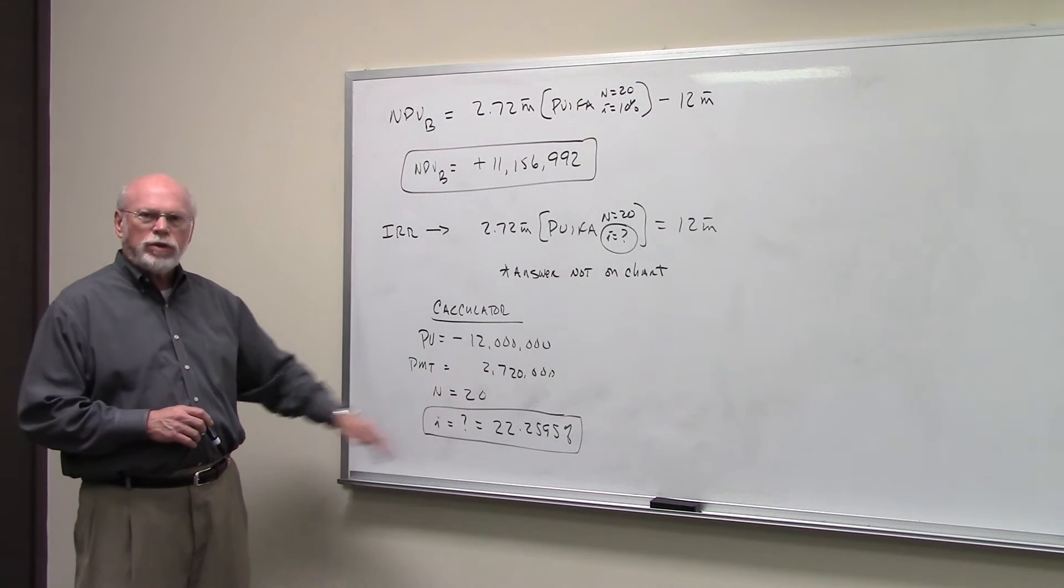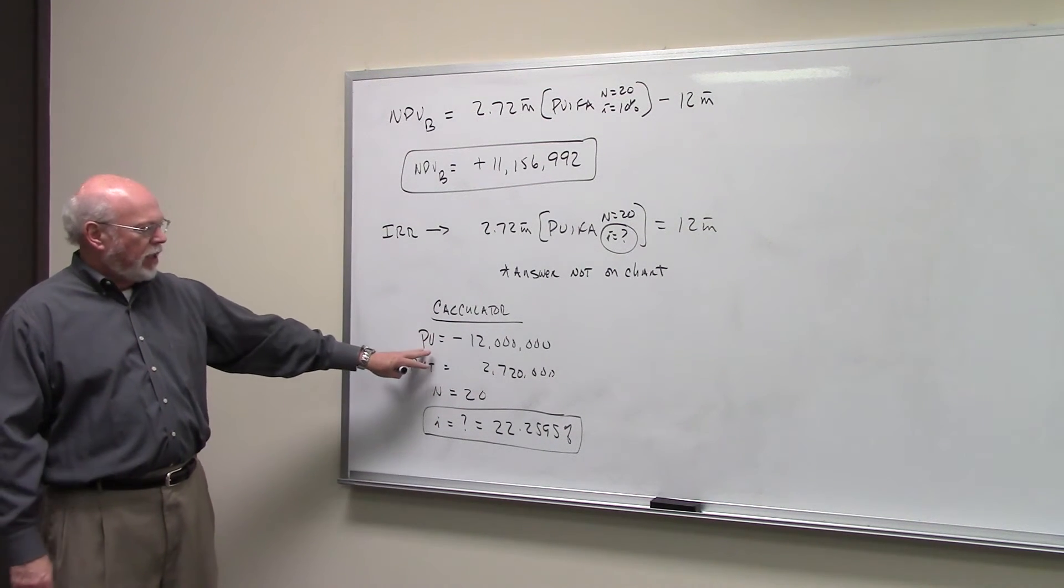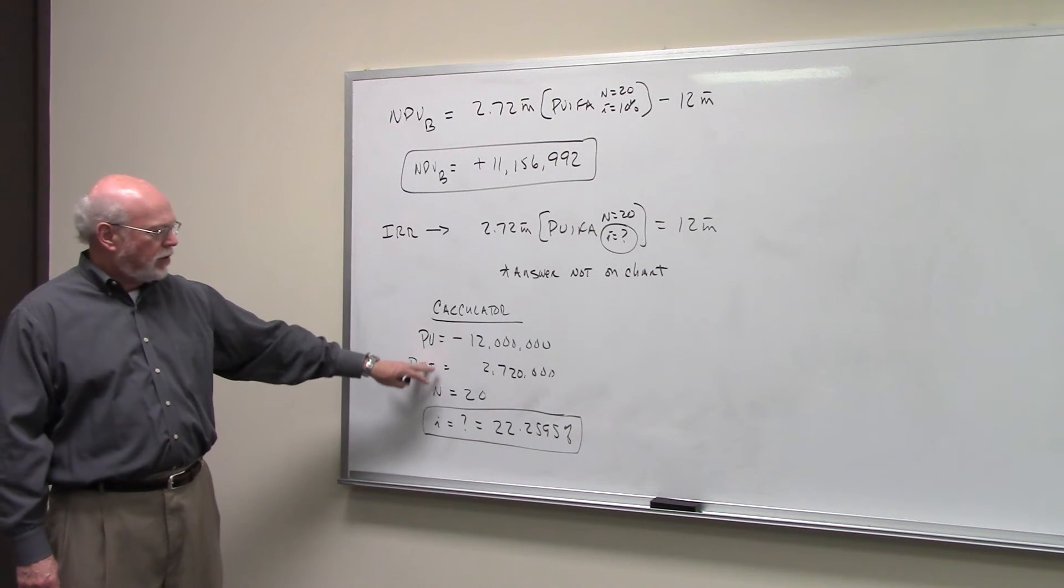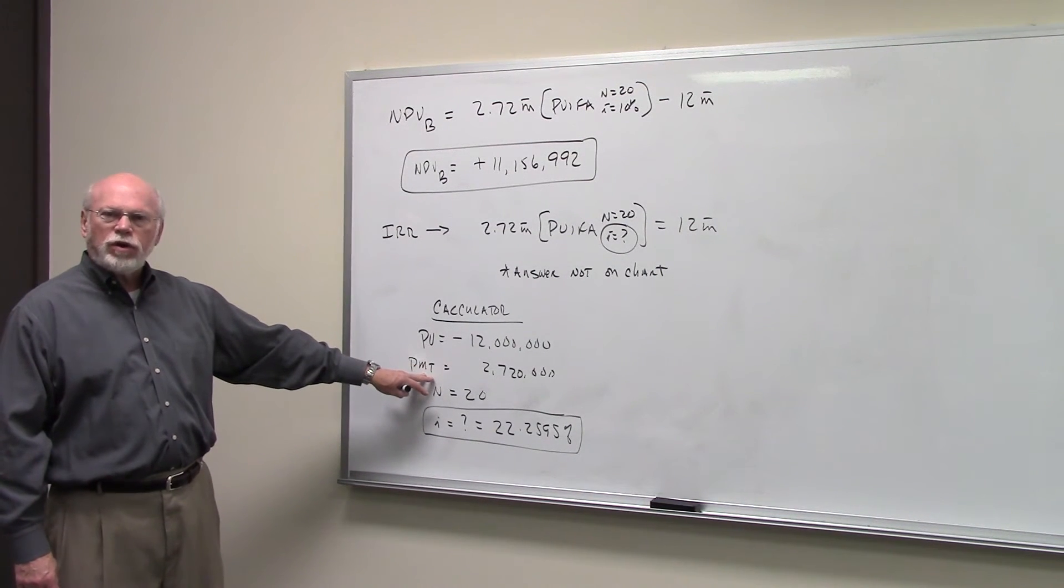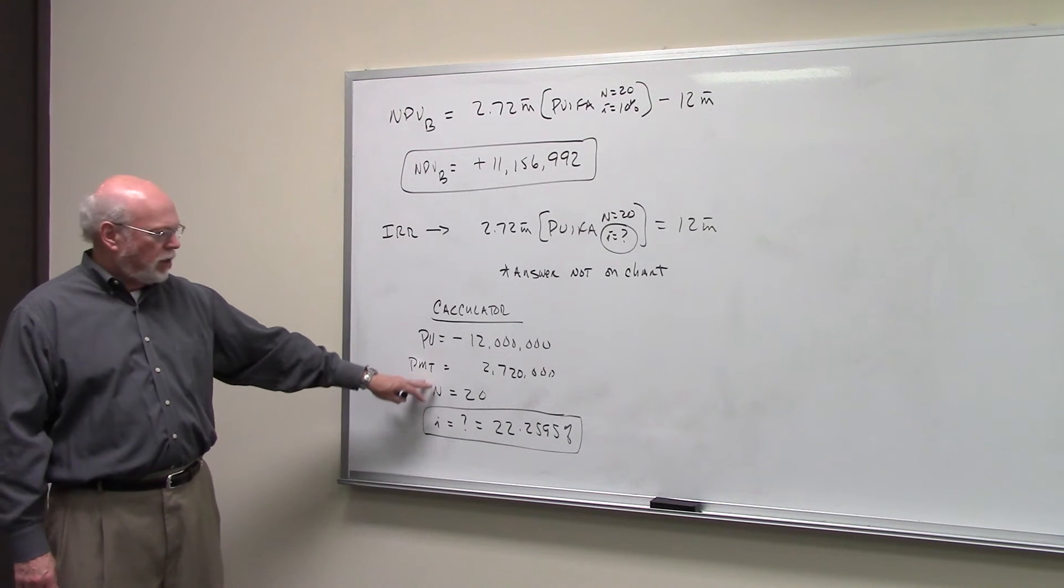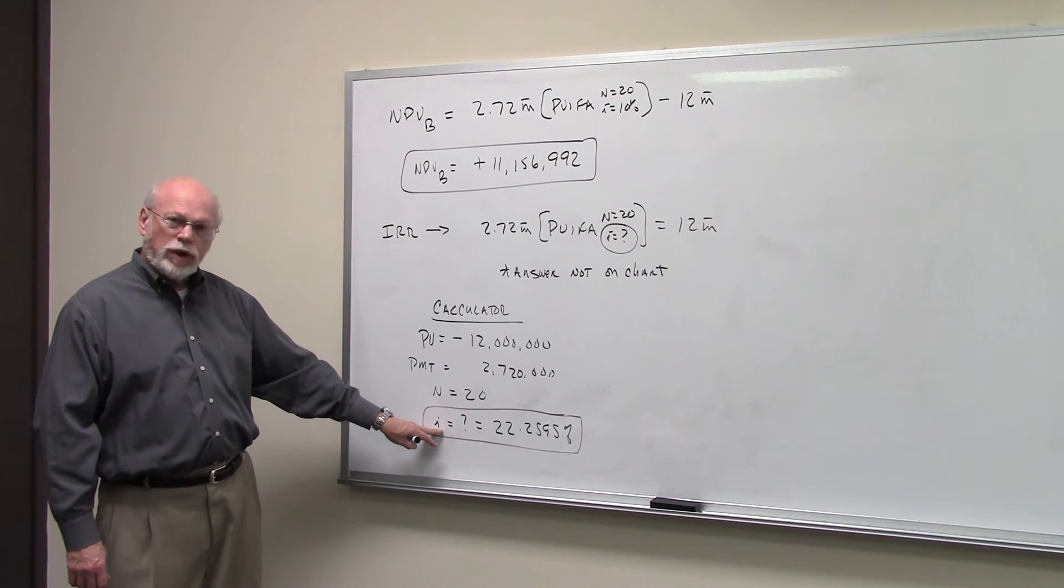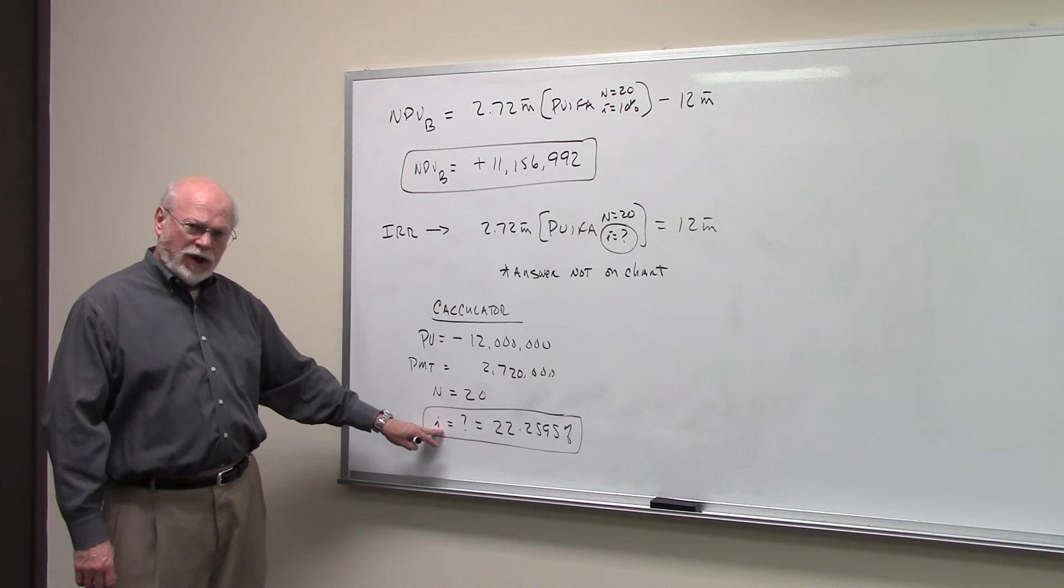If you work this internal rate of return with a calculator, enter negative $12 million as the present value for the cost. Enter $2,720,000 as your payment, which you're going to get every year for 20 years. N is 20. Have your calculator solve for I,